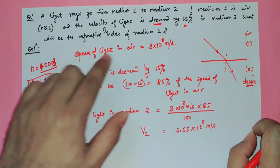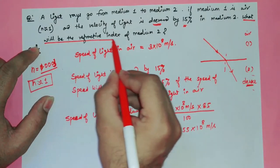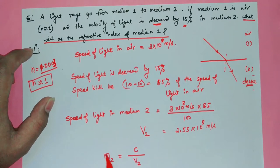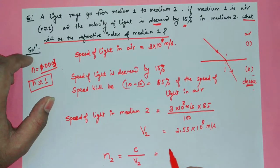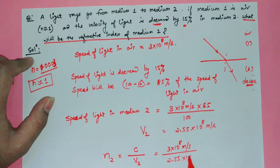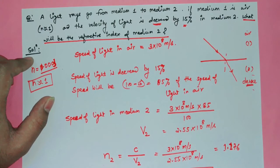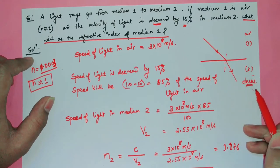Now we calculate the refractive index of medium 2. Refractive index of medium 2 = speed of light in air / speed of light in medium 2 = 3×10⁸ / 2.55×10⁸ ≈ 1.176. Since the refractive index is greater than 1, the velocity of light in this medium is relatively lower.